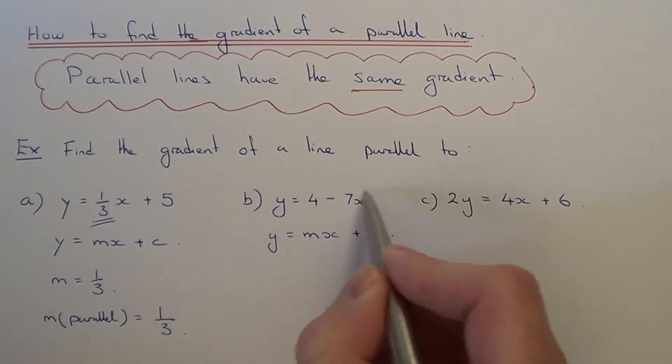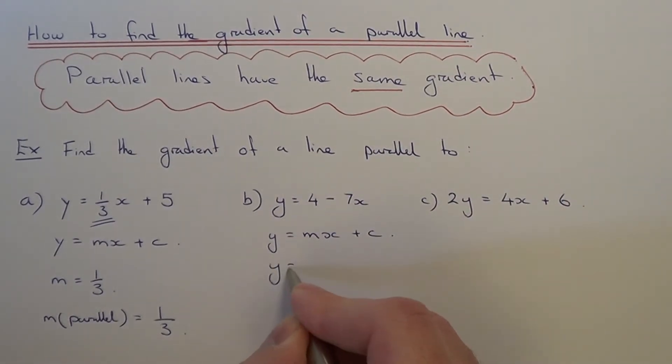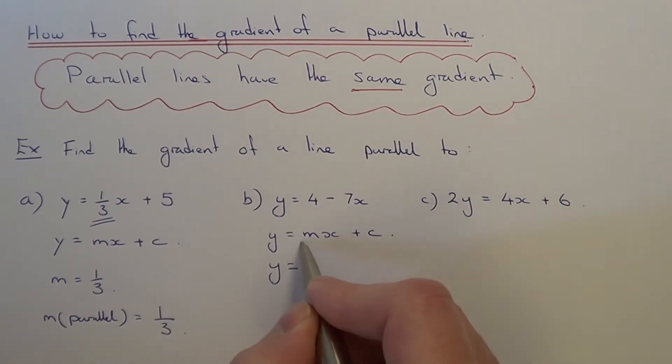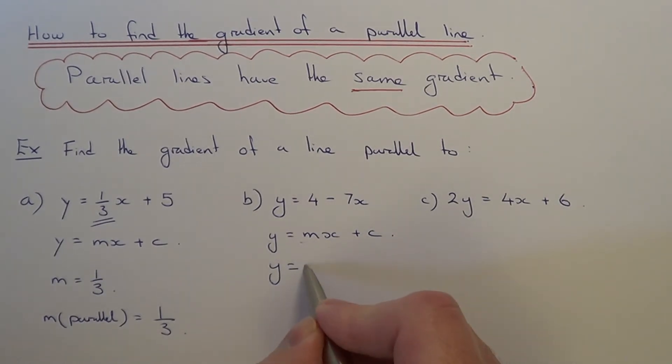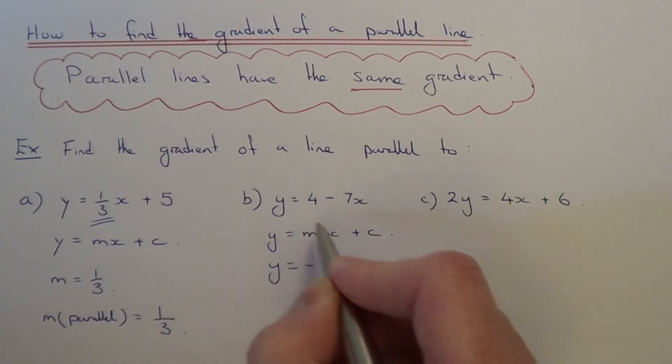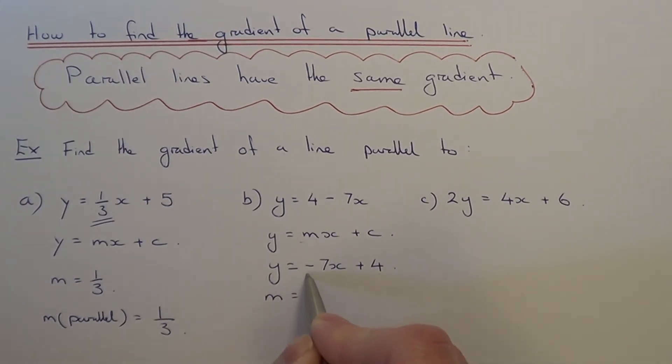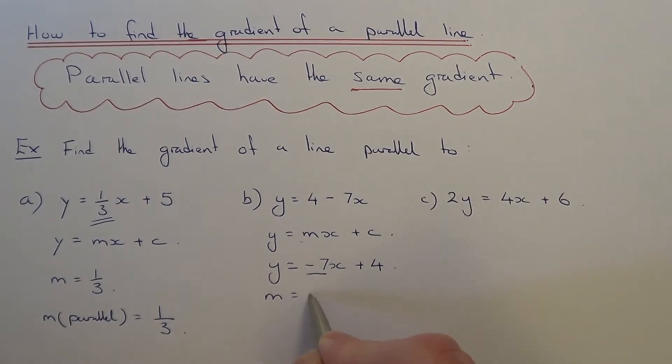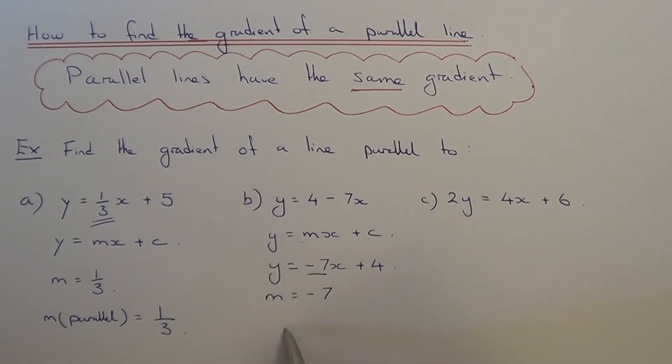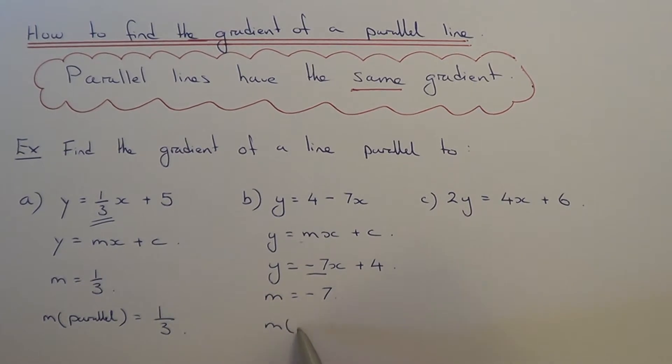It's in a slightly different order here, so let me just rewrite it in the form y equals mx plus c. So it's y equals minus 7x plus 4. The gradient of the original line is the number before x, which is minus 7. So the gradient of my parallel line will also be minus 7 because parallel lines have the same gradient.